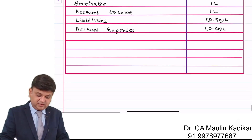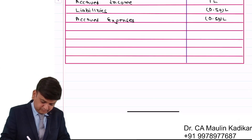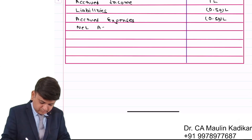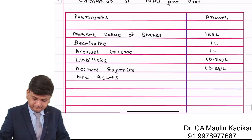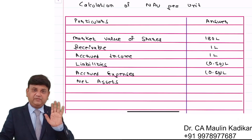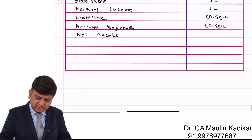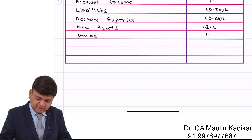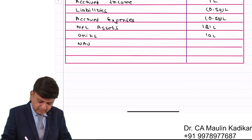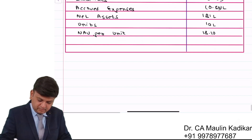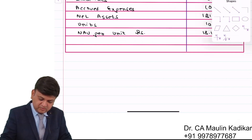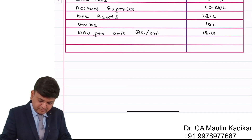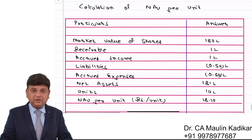This way we calculate net assets: 180 plus 1 equals 181, and the 0.50 lakh items set off against each other, so net assets are 181 lakhs. Divided by the number of units, which is 10 lakh, the NAV per unit is 18.1. Please write down the answer.